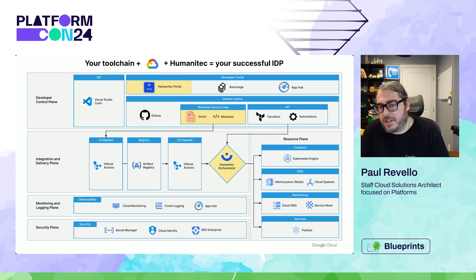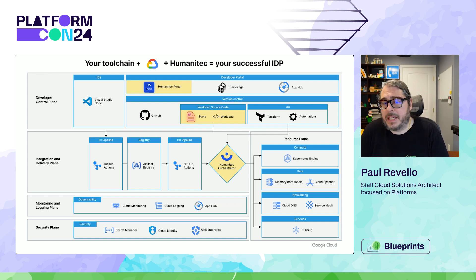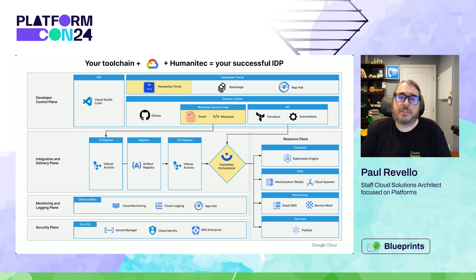Looking at things a bit more in depth, you can see that this setup utilizes Google Cloud services across the integration, resource monitoring, and security planes. We also have the capability to insert one of our new services, AppHub, at the portal layer to provide more of a Google Cloud-centric view of your applications and their dependencies. In today's talk, we're going to focus on two things: how developers can leverage workload definitions to get their application dependencies up and running without having to worry about individual infrastructure configuration details, and how platform admins can ensure that development teams are able to self-service infrastructure dependencies while following best practices and staying compliant.